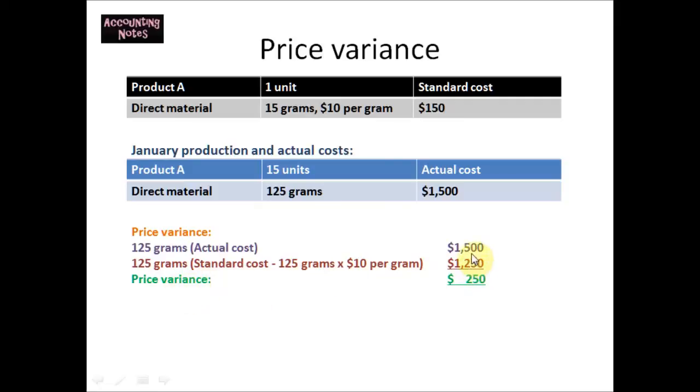So the difference between the two, you take $1500 minus $1250, gives you a price variance of $250.